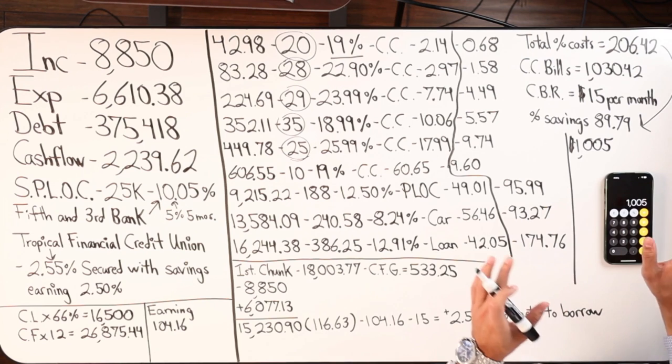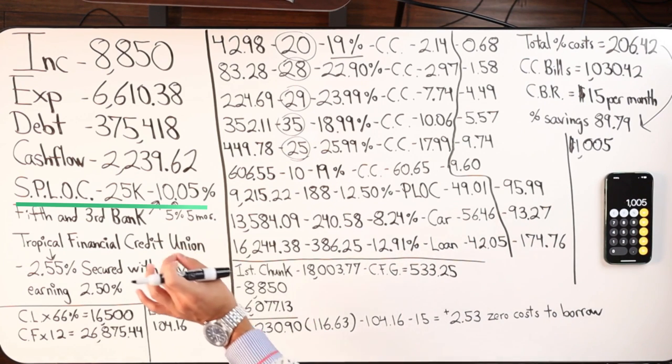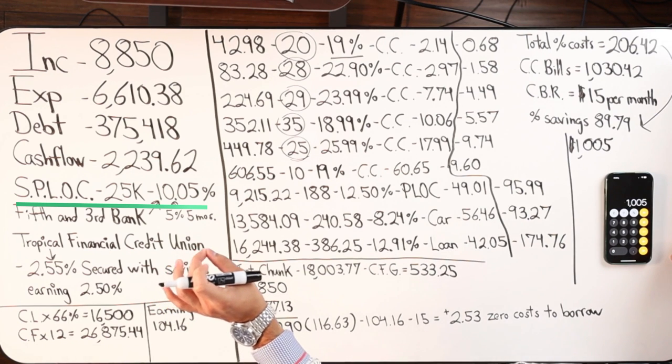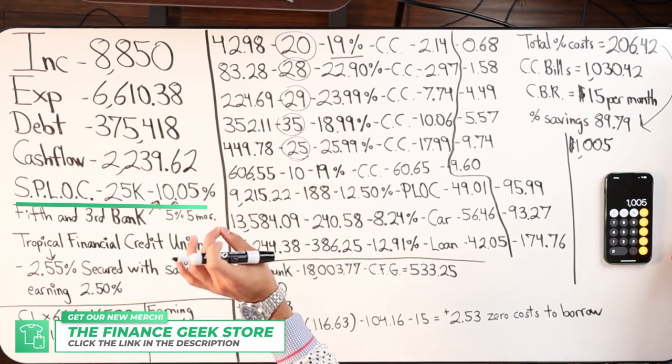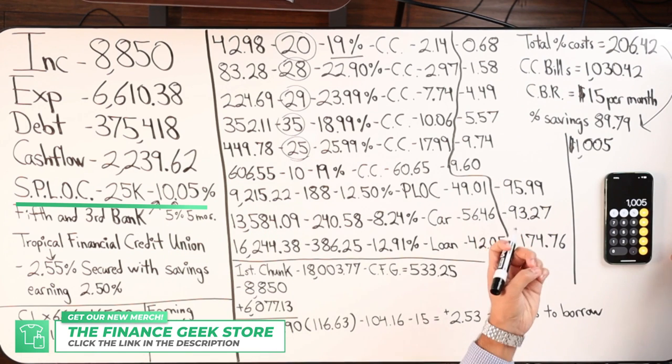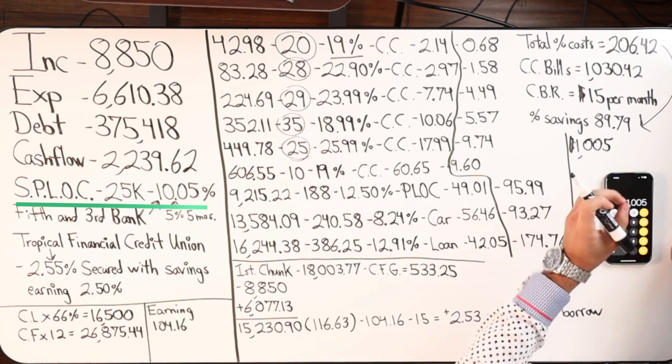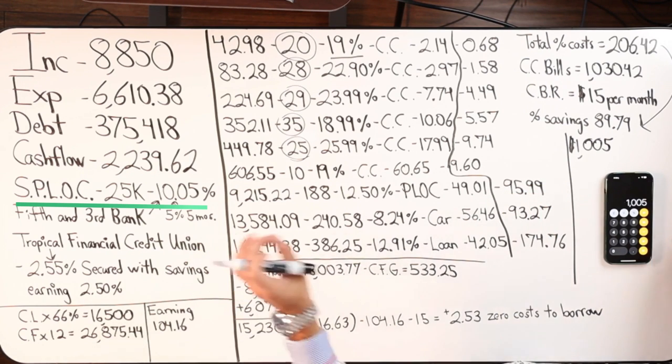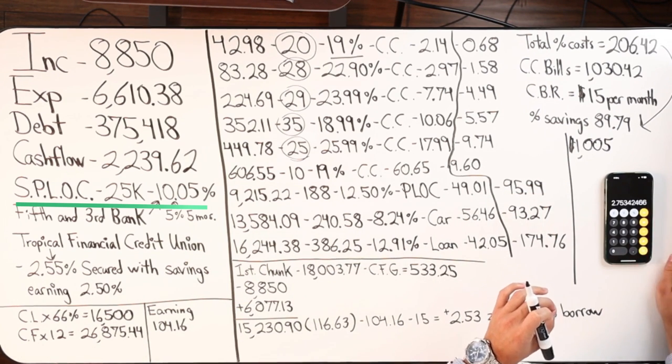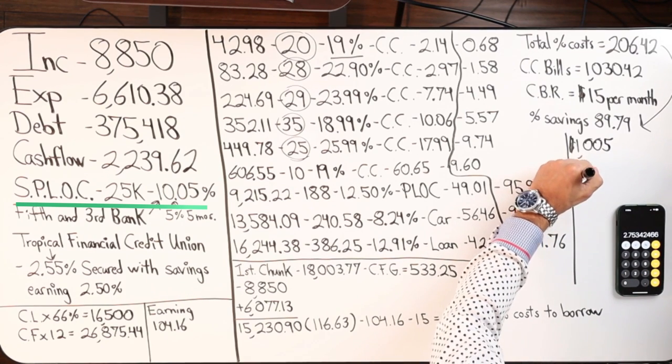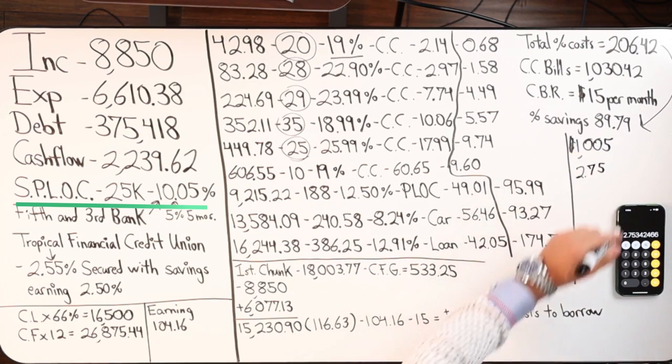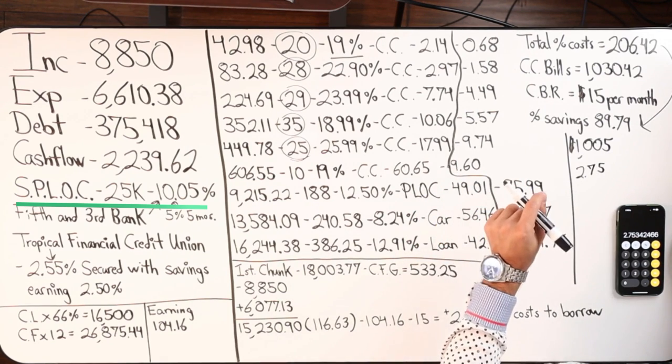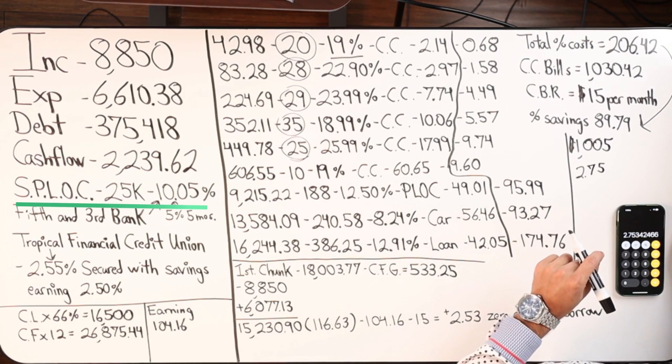Recap. Looking at this specific secured personal revolving line of credit with Fifth Third Bank, you take the amount that you owe, so in this example here, $10,000 times 10.05% and you divide it by 365, we're paying $2.75 per day for however long I owe $10,000.